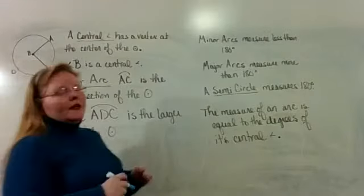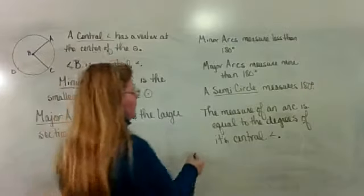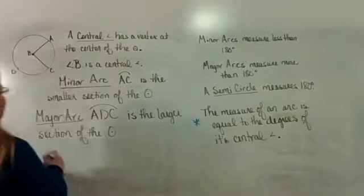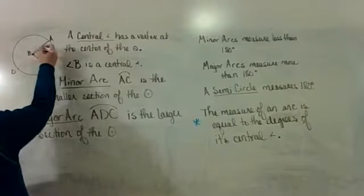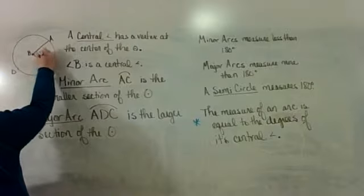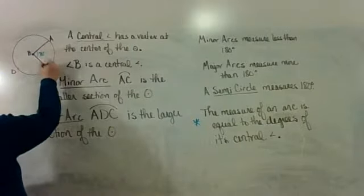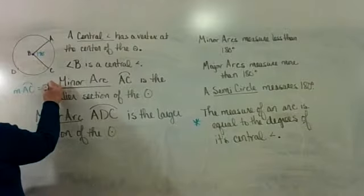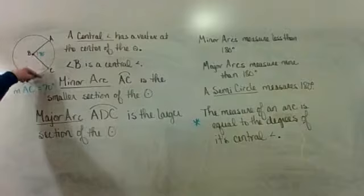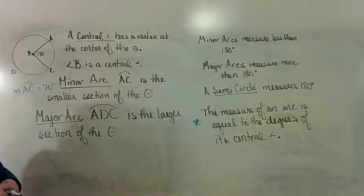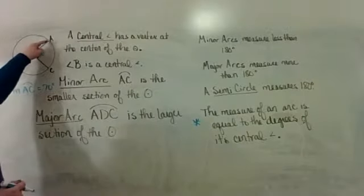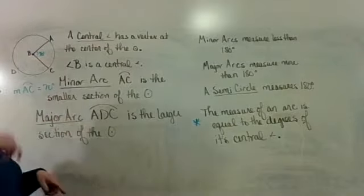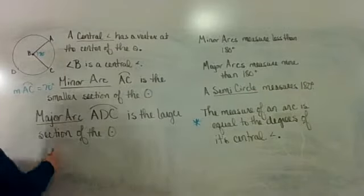Here's the key piece of information: the measure of an arc is equal to the degrees of the central angle. So if the central angle is 70 degrees, then the measure of arc AC is also 70 degrees. It doesn't matter how long the radius is — we get a degree measure, not a length. There are 360 degrees all the way around the circle.